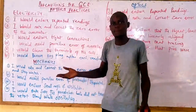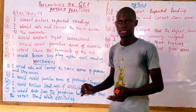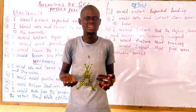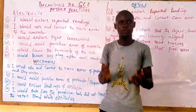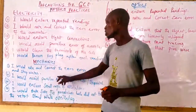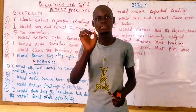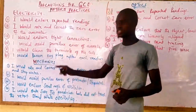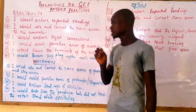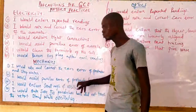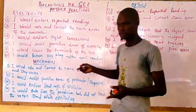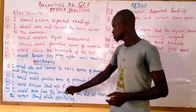Now let's look at the precautions expected in mechanics. If you are performing an experiment on mechanics — for example, simple harmonic motion, spring balance, or equilibrium — the first precaution is: I would note and correct the zero error of the protractor and stopwatch. The second precaution is: I would avoid parallax error of the protractor. Remember, you can only avoid parallax error if you are using a metal instrument or an electronic device.